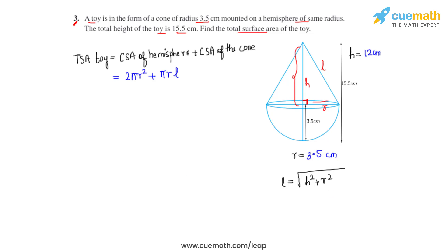So now let's substitute the values to find the slant height. In place of h² we can write 12² which is 144, and in place of r² we can write 3.5². Now 3.5² is 12.25, which when added to 144 will give us 156.25. The square root of 156.25 is nothing but 12.5, and that is the slant height of the cone.